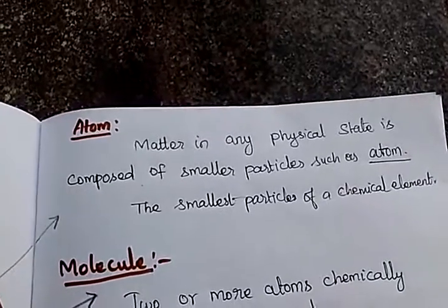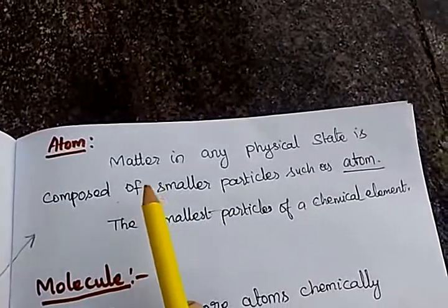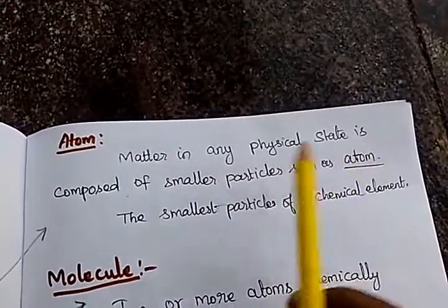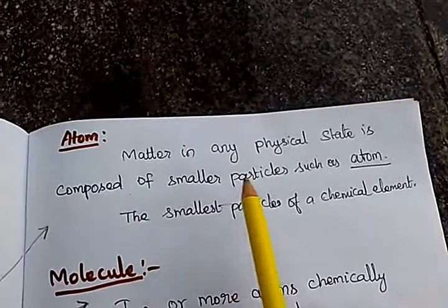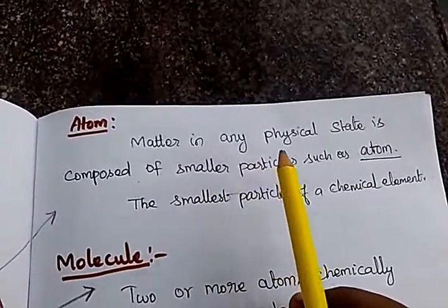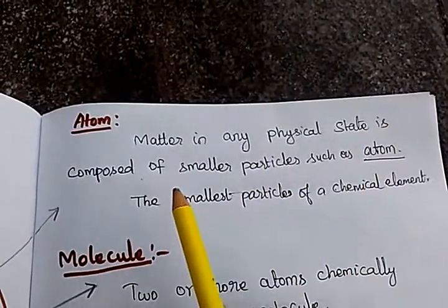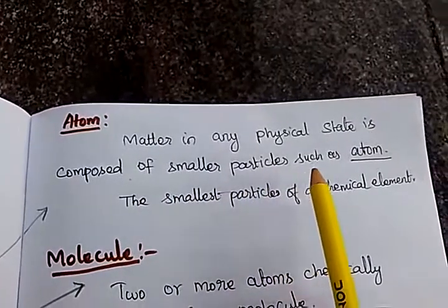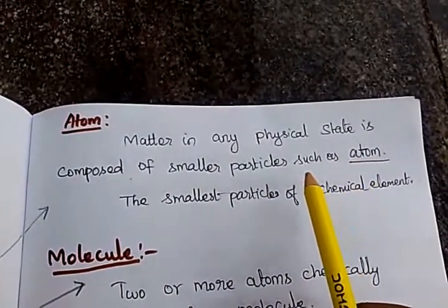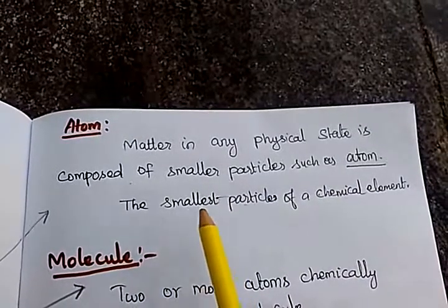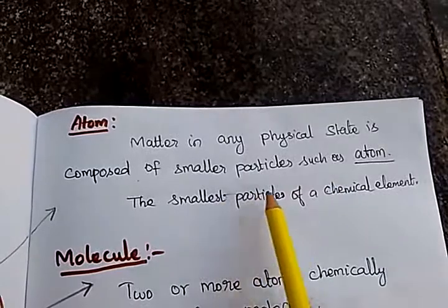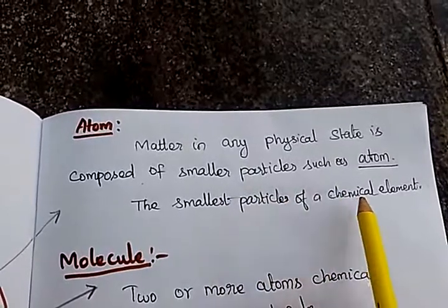What is atom? Matter in any physical state is composed of smaller particles such as atoms. An atom is the smallest particle of a chemical element.